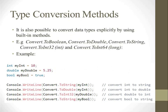Now let's move to type conversion methods. It is also possible to convert data types explicitly using built-in methods. For example: Convert.ToBoolean, Convert.ToDouble, Convert.ToString, Convert.ToInt32, Convert.ToInt64. These are the built-in methods used to convert one data type explicitly to another data type.